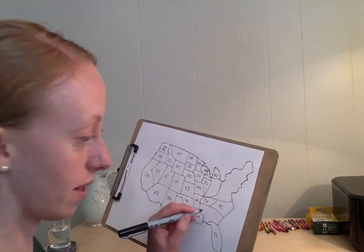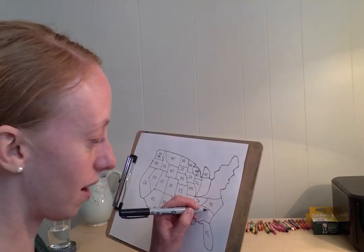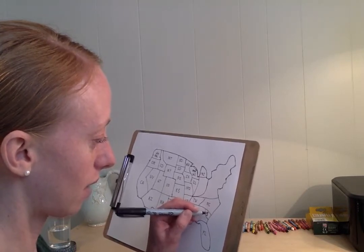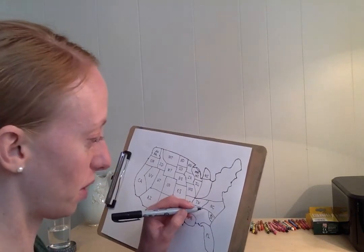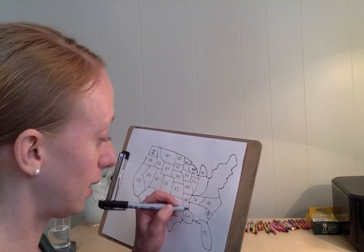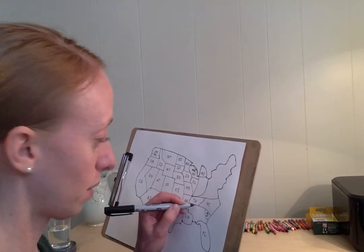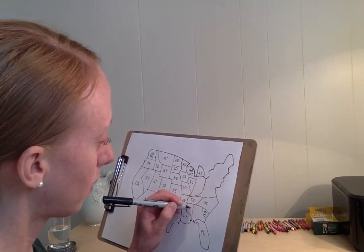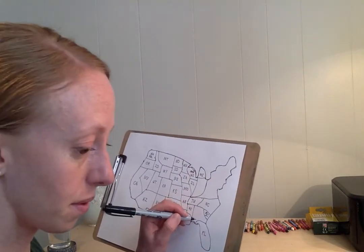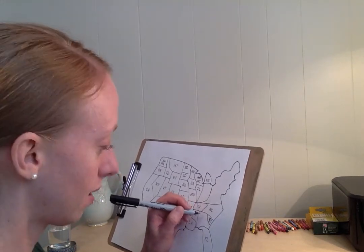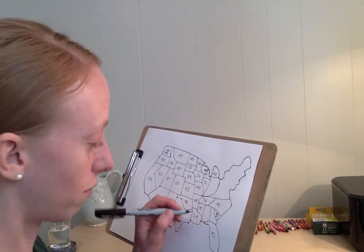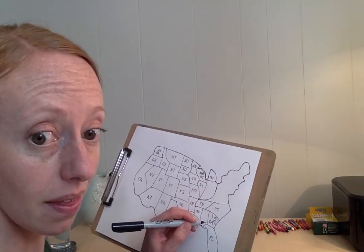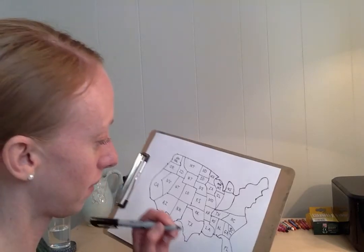We're going to split this area into four. Under North Carolina we've got South Carolina, and then we're going to split this twice: Mississippi comes straight down so it has a long skinny part there. Then split that again on top of Florida: Georgia is next to South Carolina, and Alabama is next to Georgia.